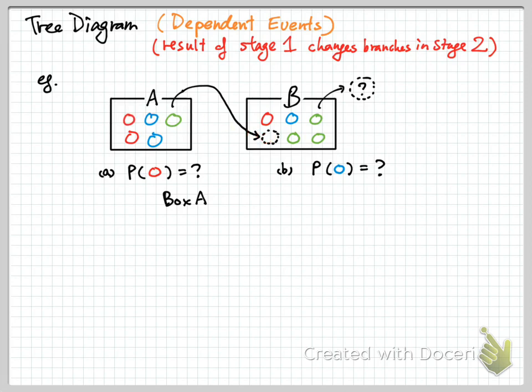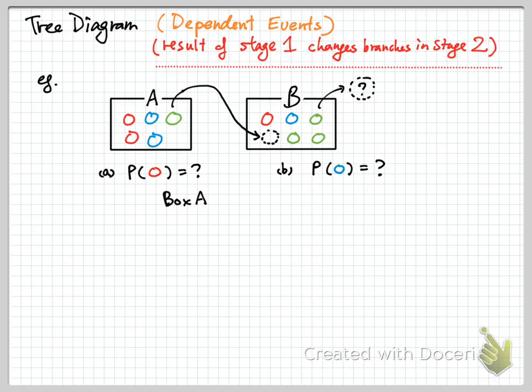Compared to if you put a blue one into box B, or if the green one goes to box B, the composition of the colors in box B will be affected. So we can see this is what we call a dependent event. I emphasize it here: the result of stage 1 changes the branches, changes the events in stage number 2.